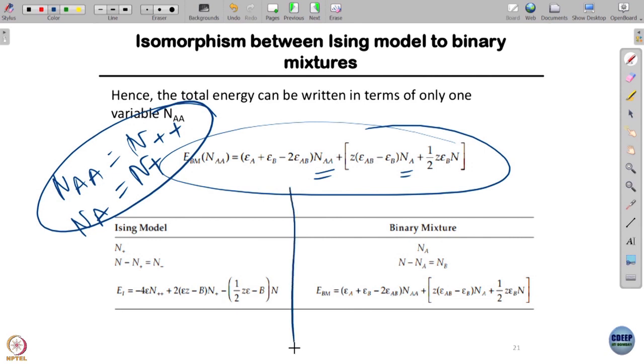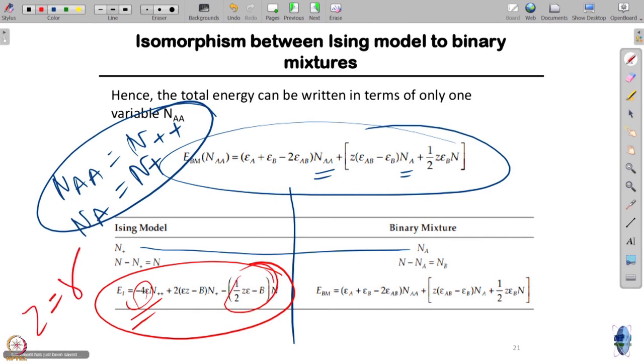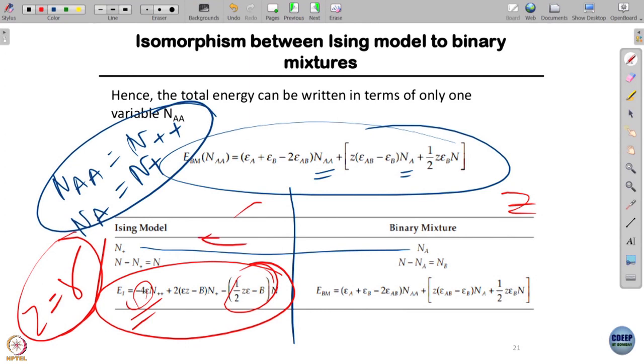Here is the connection between them. N+ is NA, N++ is NAA. The energy of the Ising model is this quantity that we did in Ising model class. Remember the factor of 4, the 2 and this quantity except Z is gamma in Ising model. I'm sorry about the change of notation, but Z is common in polymer literature while gamma is common in Ising model. There is complete isomorphism between them.